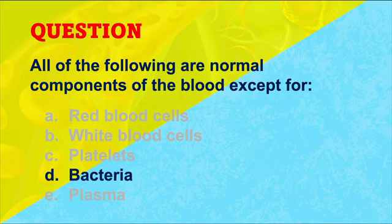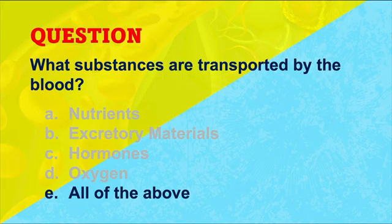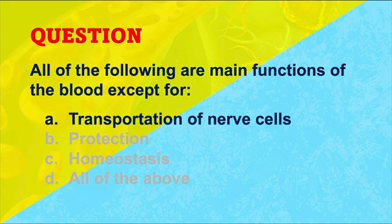Now let's see how well you did on your little test. Answer one: the component not normally in the blood is D — bacteria. If you have bacteria in your blood, that's a bad thing called septicemia. Answer two: all of those substances are transported by the blood, so the answer is E — all of the above. And lastly, while transportation is a main function of blood, the blood doesn't transport nerve cells — that would be kind of weird. That's it for this video, but in the next video we're going to get into more details about what exactly is in the blood. See you over there.